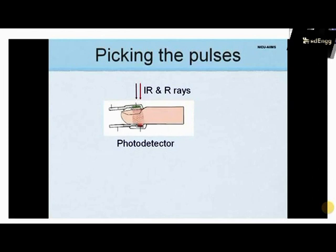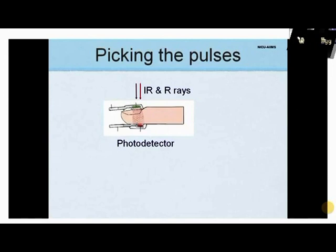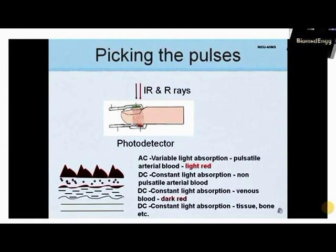Each pulse oximeter probe contains two light emitting diodes which emit red and near infrared wavelengths through a cutaneous vascular bed. A photo detector on the other side measures the intensity of transmitted light at each wavelength, from which the oxygen saturation is derived. This is based on data stored in the memory of the oximeter.